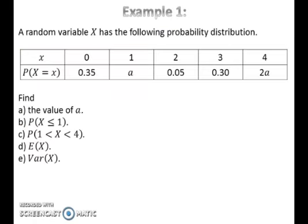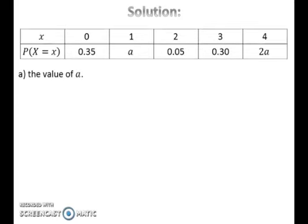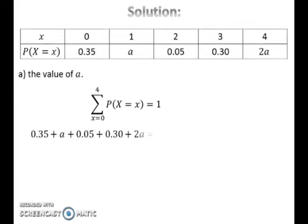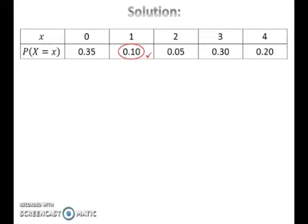Let's look at Example 1. To find the value of a, take the summation of all probabilities and equate it to 1, then solve the equation for a. Now that the value of a is found, the probability distribution is complete and can be used to find probability, expected value, and variance.